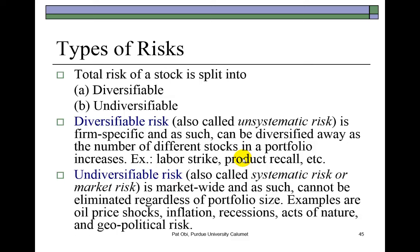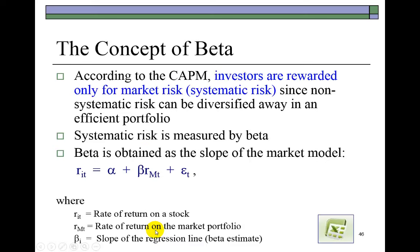Regardless, you would still be exposed to undiversifiable risk, also known as systematic risk or market risk, such as risks associated with price shocks, inflation, recessions, acts of nature like natural hazards, and geopolitical risk. Since company-specific risks can be diversified away, investors would be rewarded only for market risk — only for the systematic risk that they take on in the stocks they select.